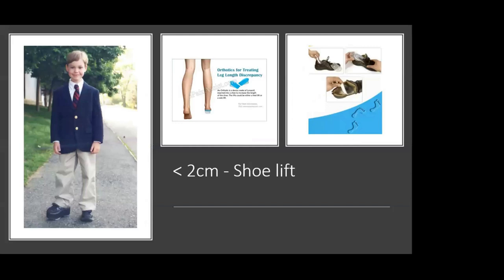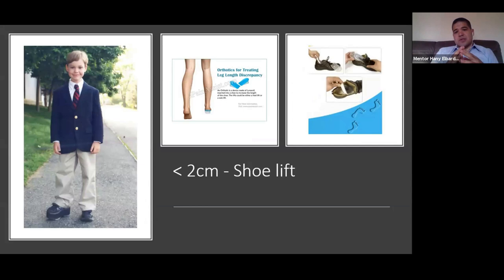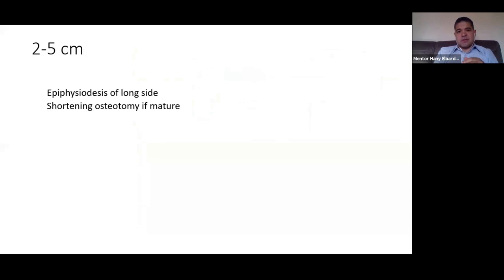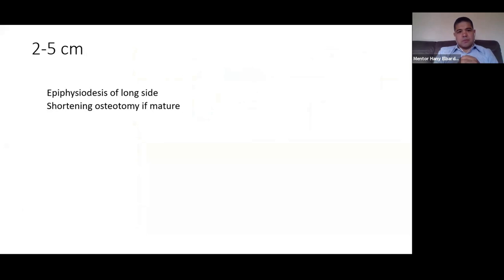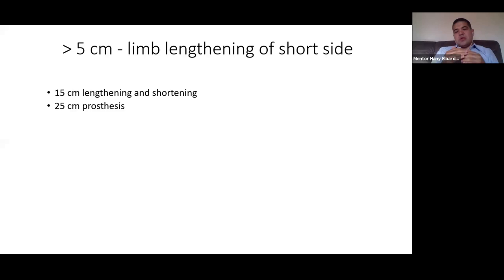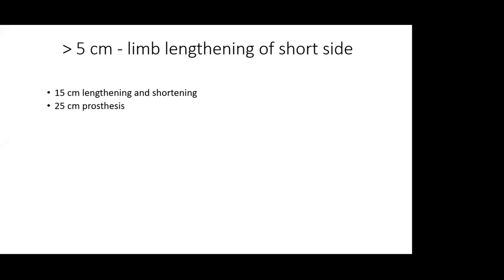If the shortening is less than two centimetres, no surgery is needed — simply give the patient a shoe lift to compensate. Up to two centimetres, a shoe lift suffices. For two to five centimetres, surgery is required: epiphysiodesis of the long side, or shortening osteotomy of the long side in adult patients; in pediatric patients we usually do epiphysiodesis of the long side. If it is more than five centimetres, you go for limb lengthening of the short limb, as shortening the patient by more than five centimetres is not appropriate.